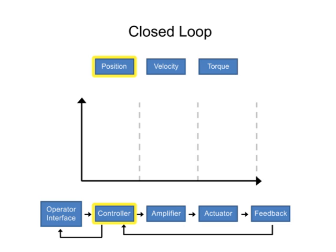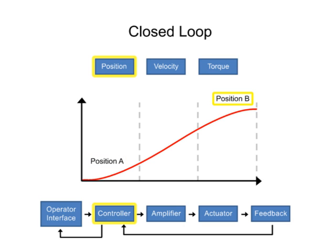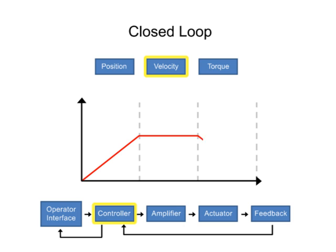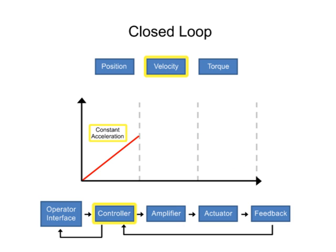Position parameters require a start and a finish position to move a load. The velocity profile resembles a trapezoidal shape. In this example, the acceleration, velocity, and deceleration is constant.